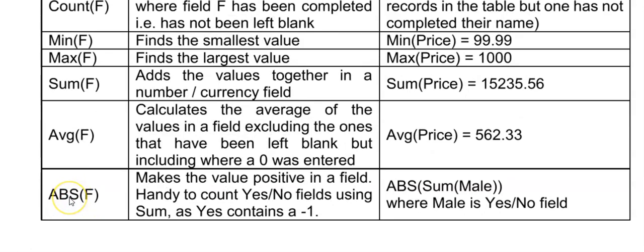I've included ABS as one of these functions, but it's not an aggregate function. But it's handy to use with aggregate functions, especially when your aggregate function is on a yes, no field. So ABS stands for absolute value, and it will give you the positive value of what you put inside of the round brackets.